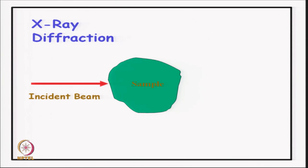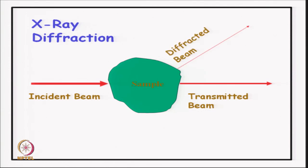Let us look at X-ray diffraction. We have an incident beam falling on a sample. We expect a transmitted beam in the same direction as the incident beam — if not all X-rays are absorbed, there will be a transmitted beam. This is what is used in normal medical X-ray photographs. But if the sample is crystalline, you can expect beams in directions other than the transmitted beam. These beams are the diffracted beams.